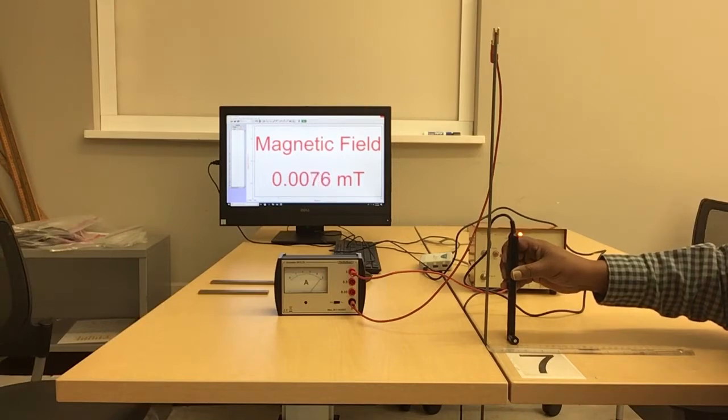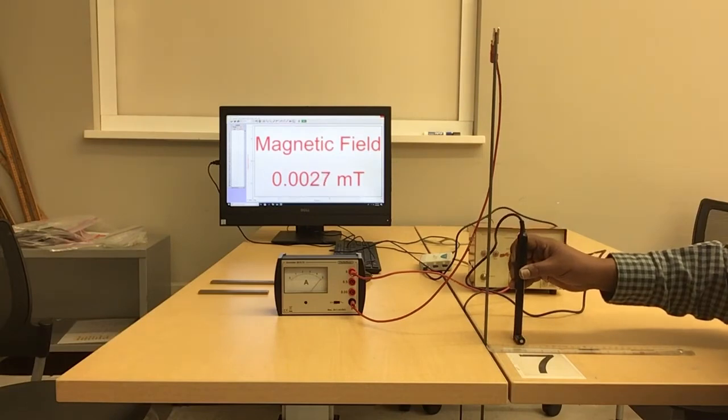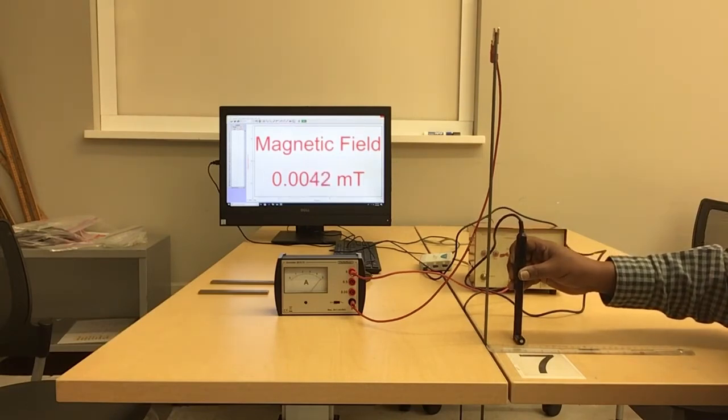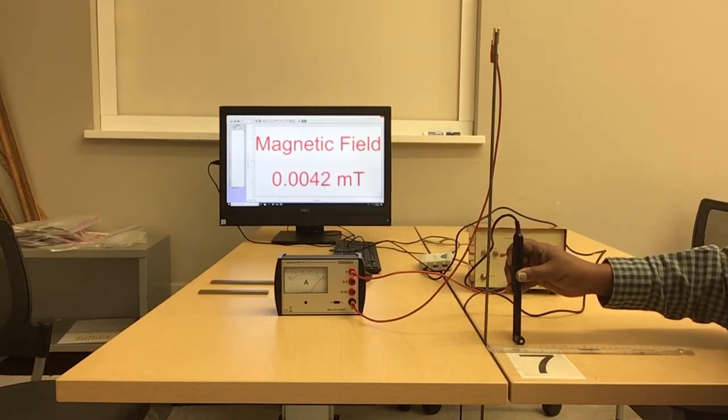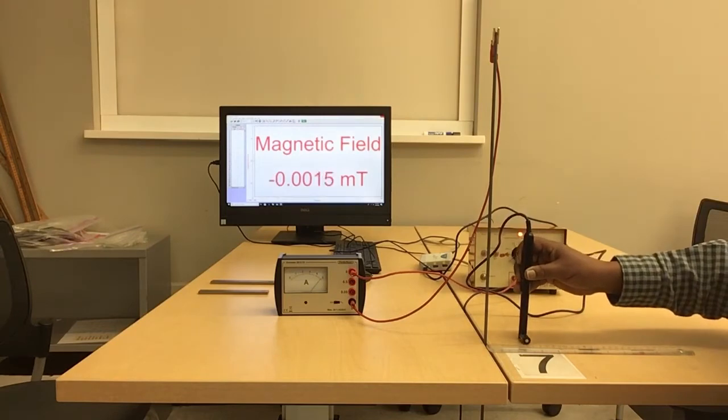So for five centimeters you read about 0.017, and then at five centimeters you read about 0.003 tesla. And the last one is at six centimeters.